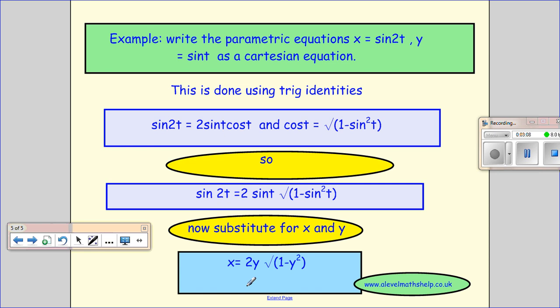And that's fine. That's a Cartesian equation. It's an equation just with x and y's in. You don't always have to have it so you get y equals something or x equals something. As long as you've just got only x and y's and no t's left, you've done what they've wanted you to do.